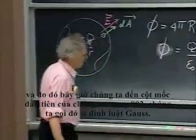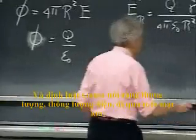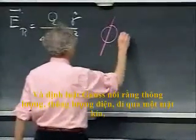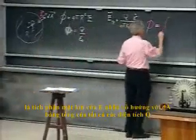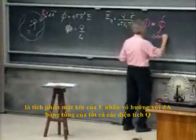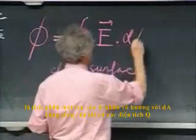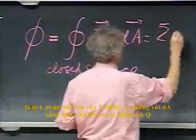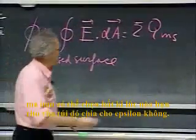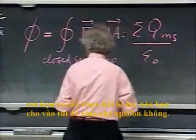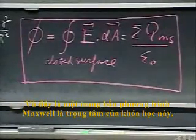Therefore, we now arrive at our first milestone in 8.02, which we call Gauss's law. Gauss's law says that the electric flux going through a closed surface equals the sum of all charges Q inside the bag divided by ε₀. And this is the first of four equations of Maxwell, which are at the heart of this course.